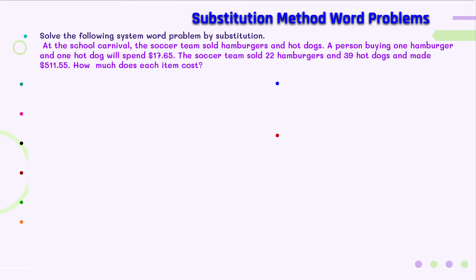Here is an example of a question. Solve the following System Word Problem by substitution. At the school carnival, the soccer team sold hamburgers and hot dogs. A person buying one hamburger and one hot dog will spend $17.65. The soccer team sold 22 hamburgers and 39 hot dogs and made $511.55. How much does each item cost?